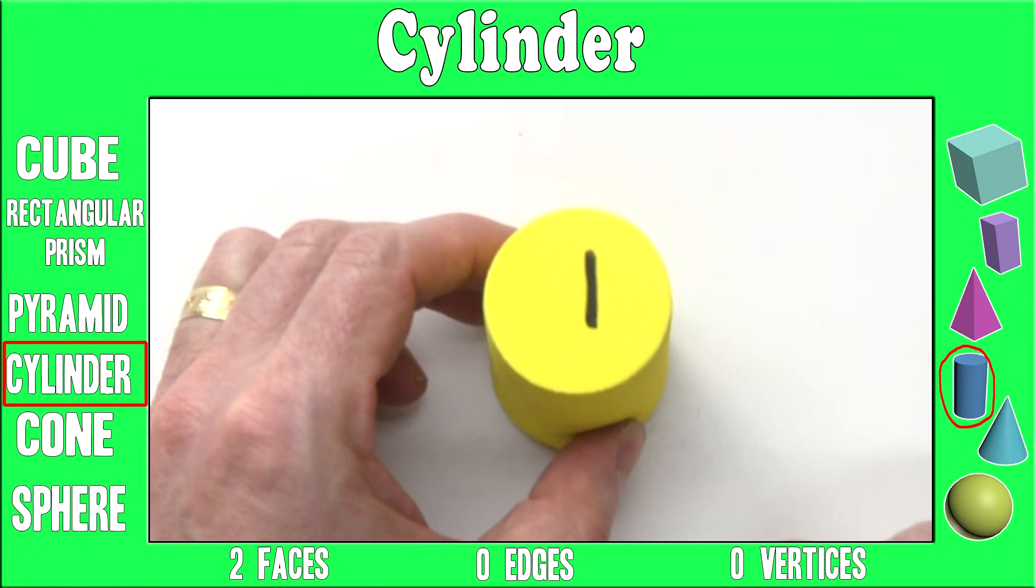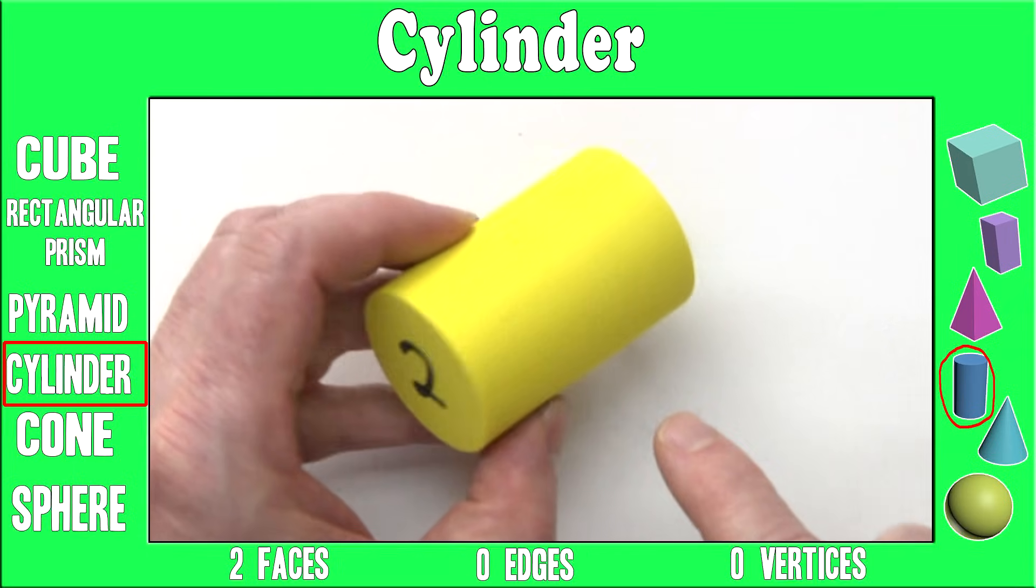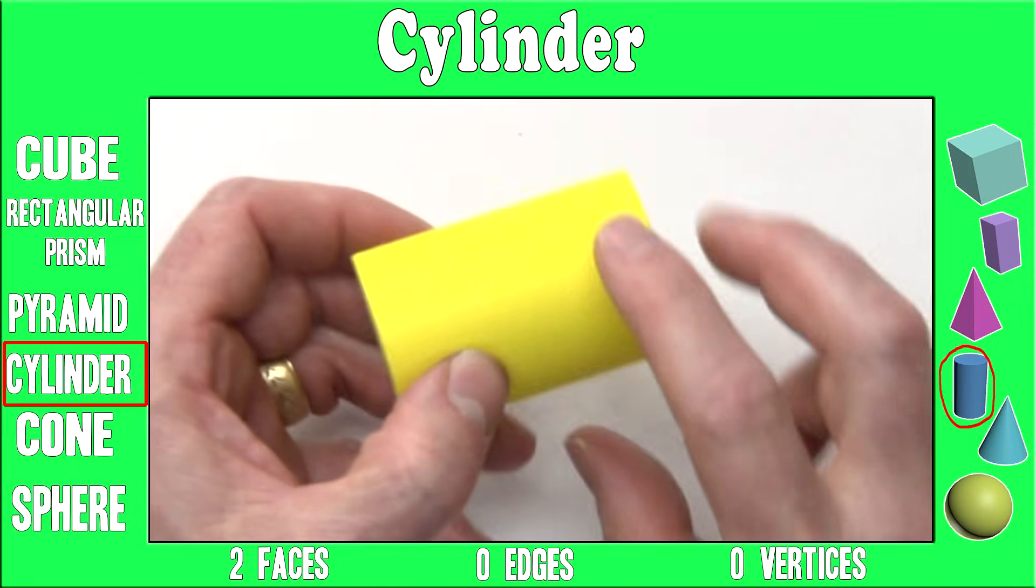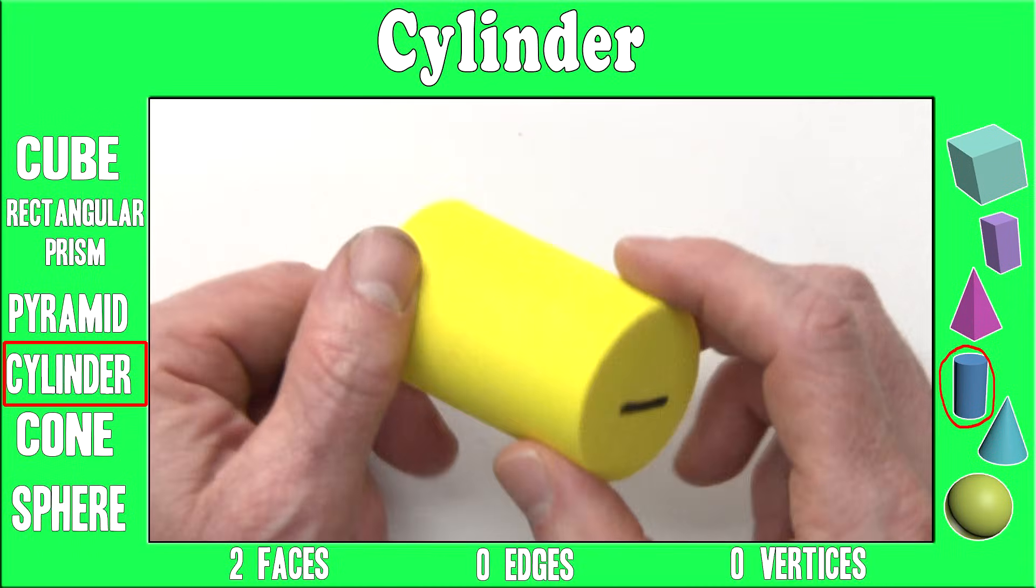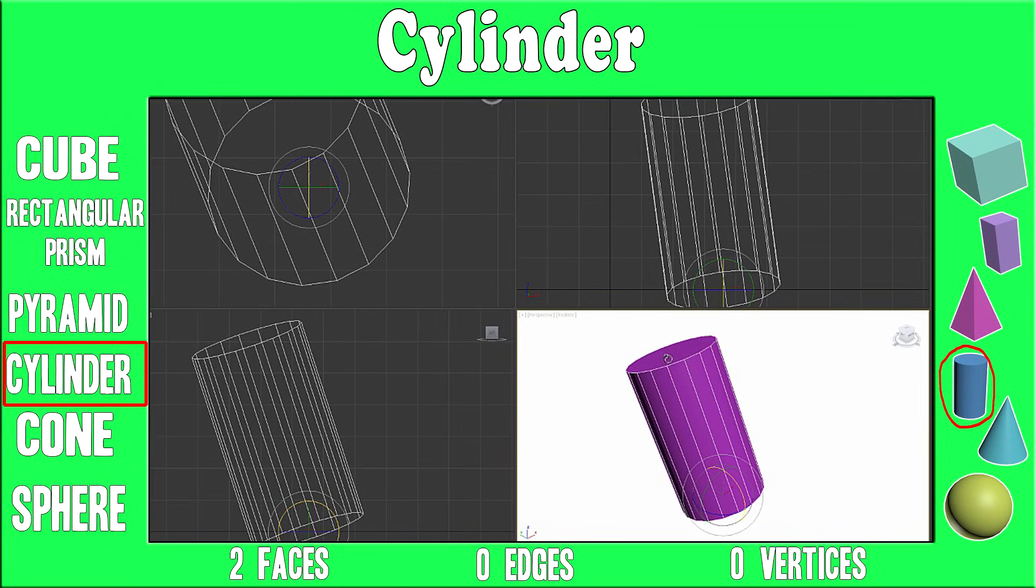Cylinders have two faces. One, two. They have zero edges and zero vertices. For this lesson we only count flat faces, not curved faces.